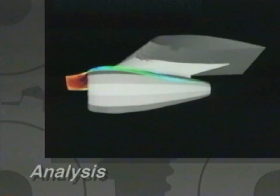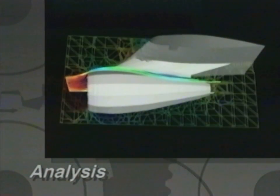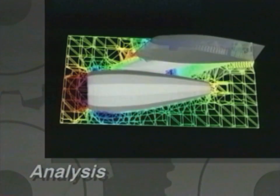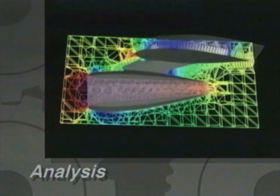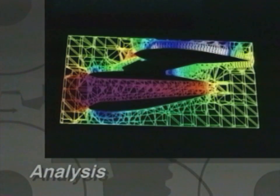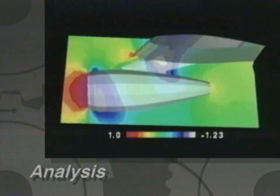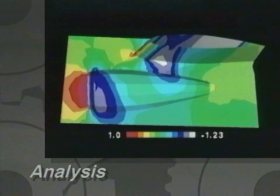Techniques for subsetting the data, inspecting vector fields, and investigating arbitrary cross-sections of the computational grid provide for a comprehensive visual analysis of the information.